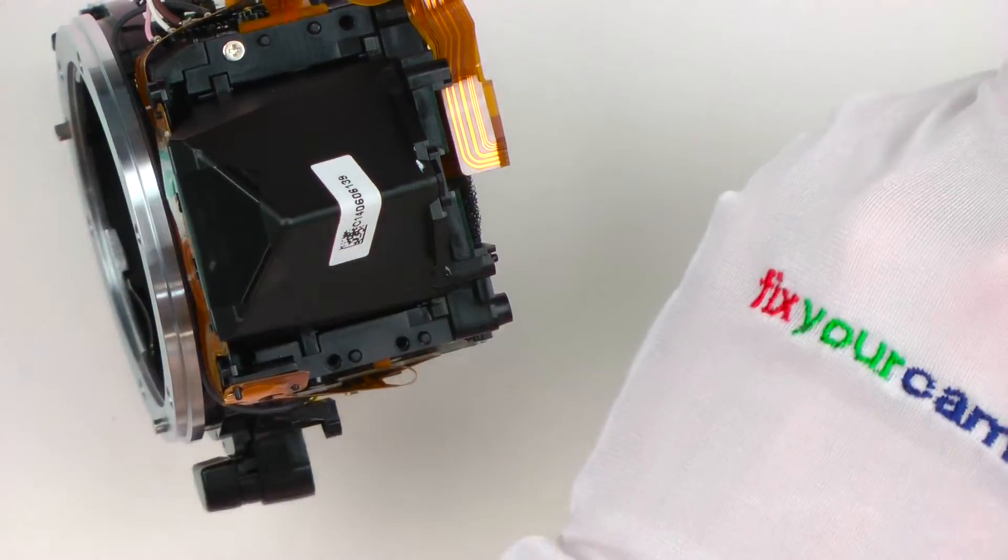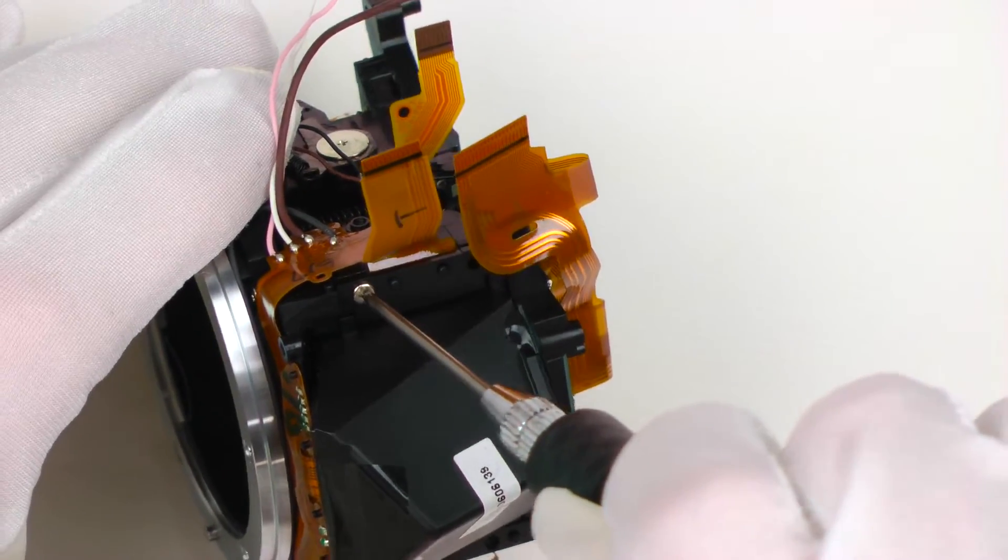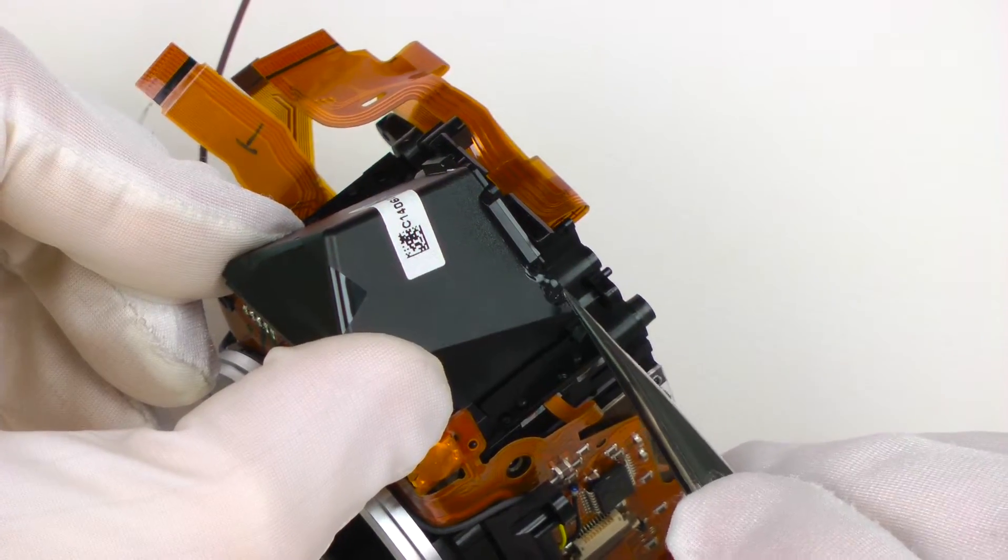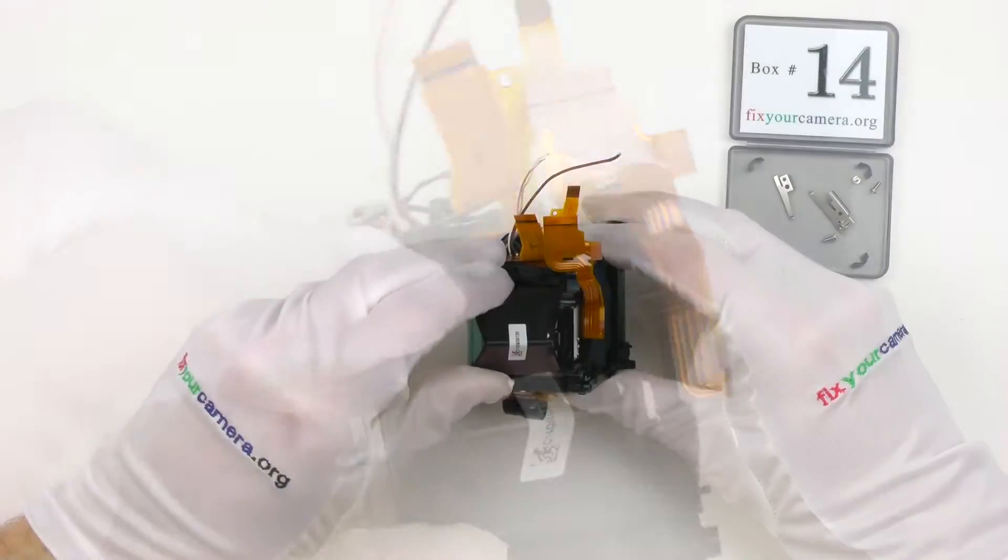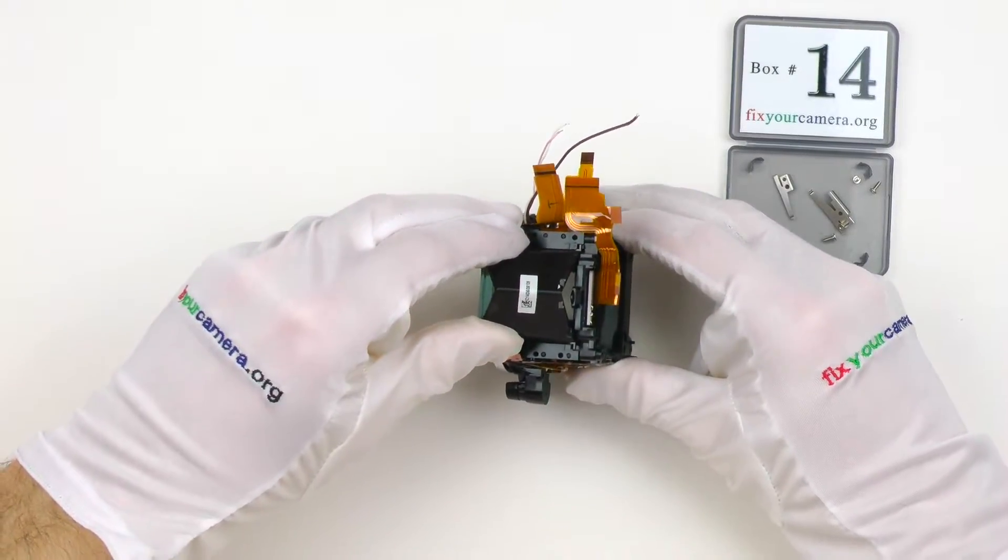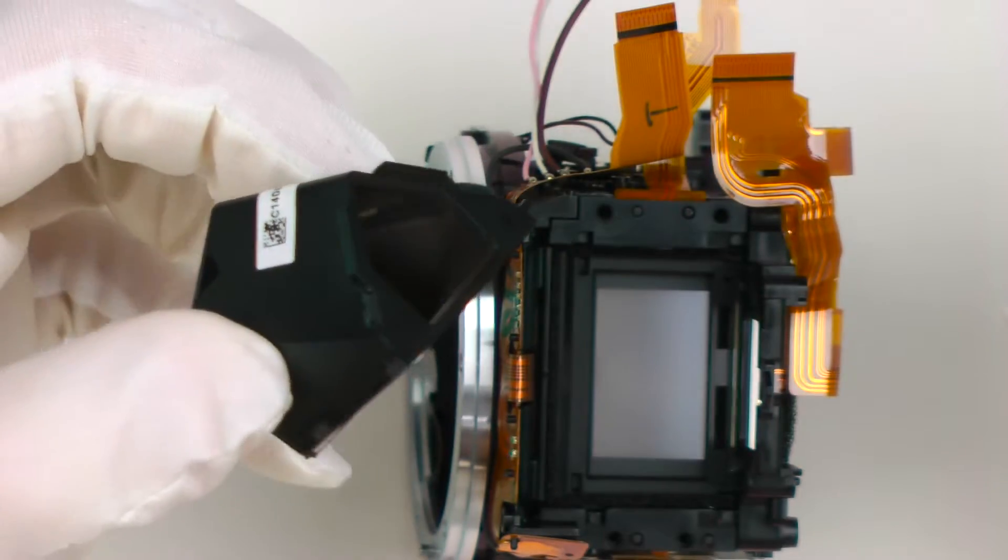Moving on. The rest of the viewfinder, pentamirror, just four screws holding it and two small dots of glue. This glue is called Super X. No adjustments for the viewfinder position in this model, as in most cheap DSLRs.